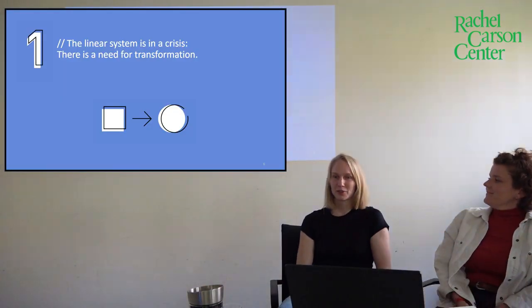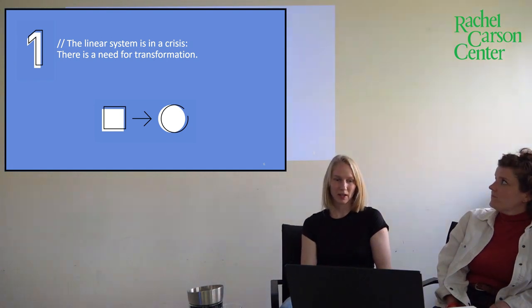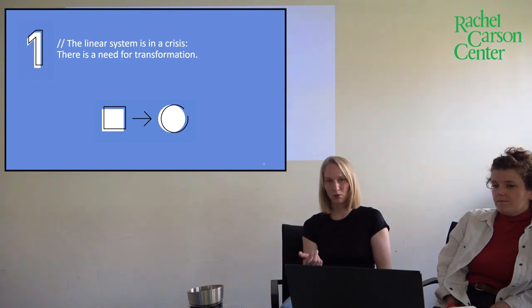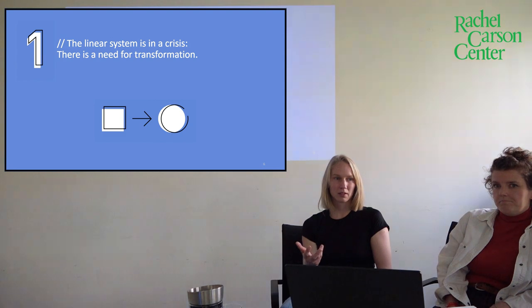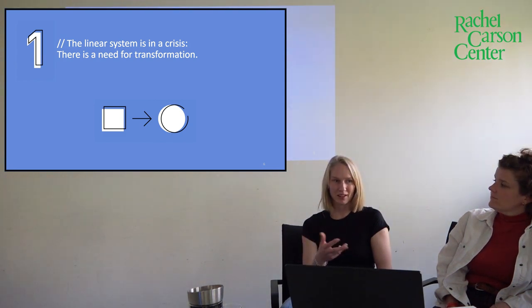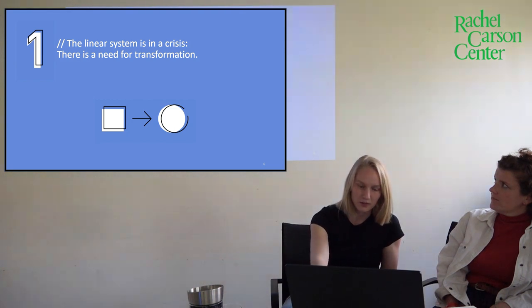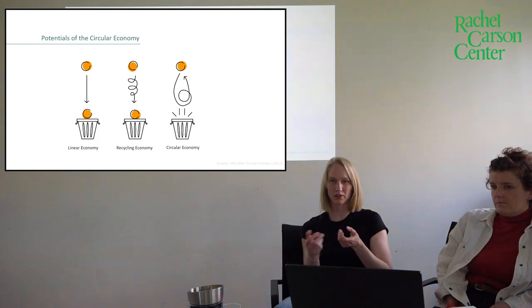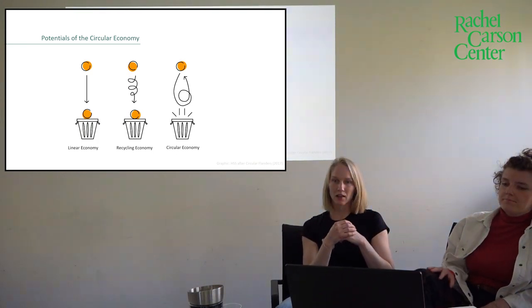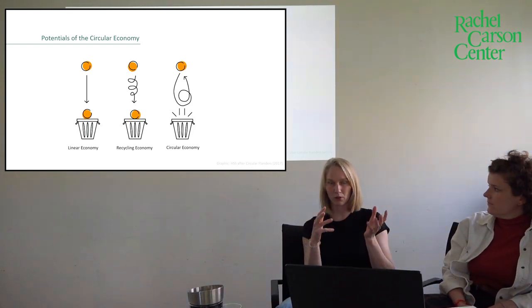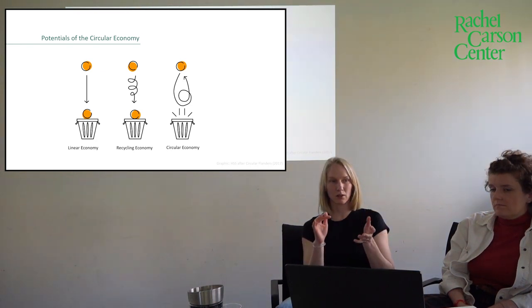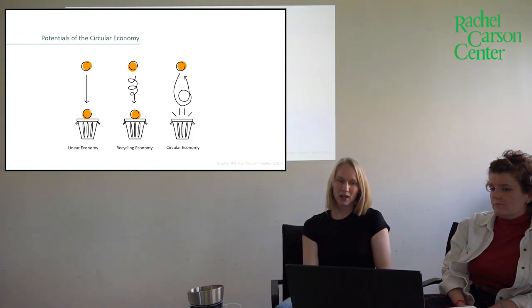Why do we work with the term circular society? The fact is that our economic system at the moment is in a deep crisis. The economic system right now is a linear system. There's consensus that we need transformation towards sustainability. One sustainability strategy that has a big hype at the moment is the circular economy - not only in science but also in the economic world and at the city level.